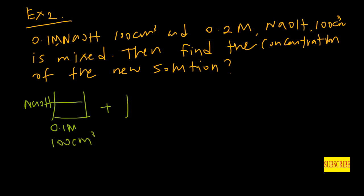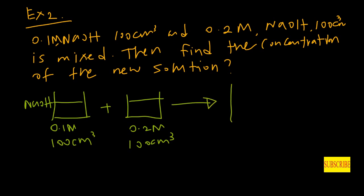This first solution is mixed with our second solution, which is 0.2 M NaOH with 100 cubic centimeters. The resulting solution has a total volume of 200 cubic centimeters.